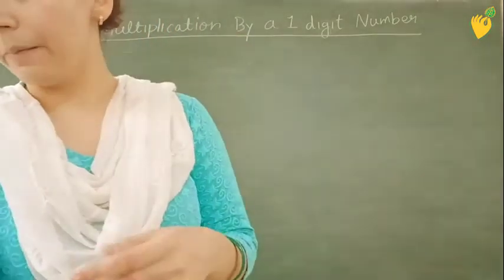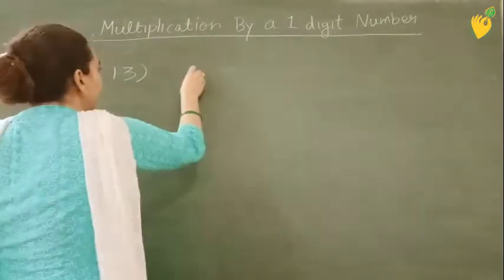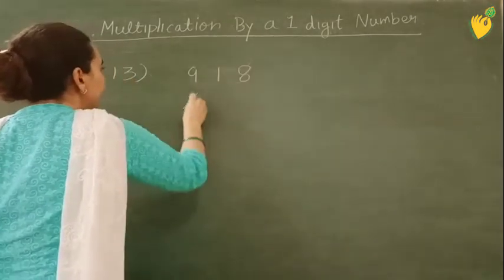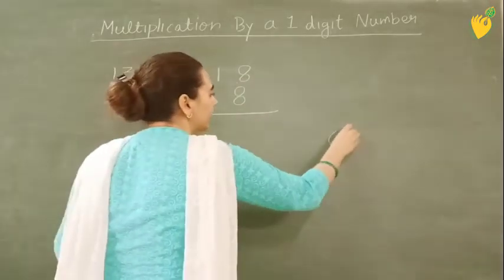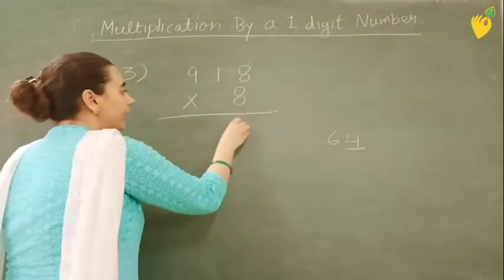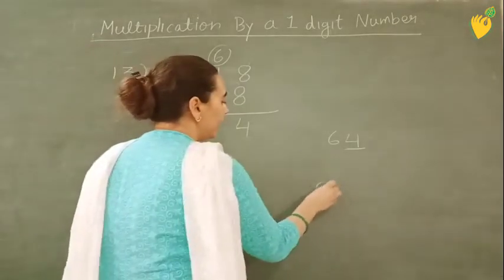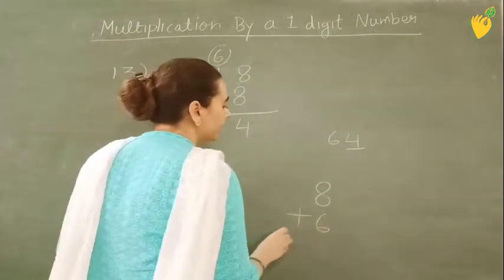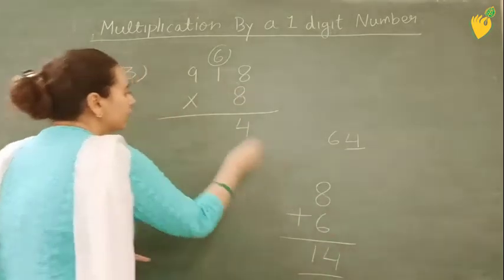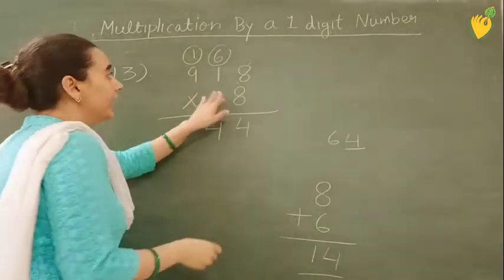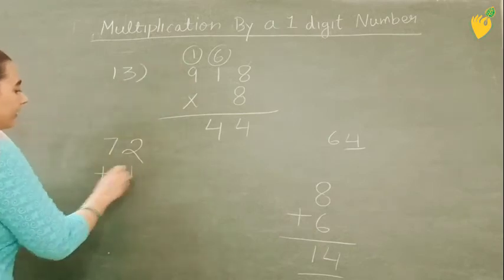Now question number 13. Question number 13 is 918 multiplied by 8. So again 8 8's are 64. Again this 4 you will write here. And this 6 will be carry. 8 1's are 8. 8 plus what is carry now? 6. 8 plus 6 is 14. Again you will not write these 2 digits here because 9 is left. So this 4 will be here. And this 1 will be carry. 8 times 9 is 72. 72 plus 1 is 73.